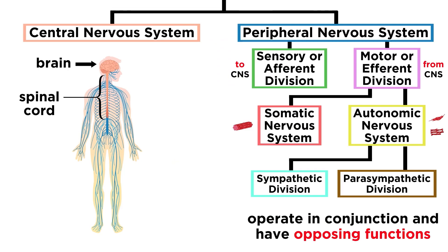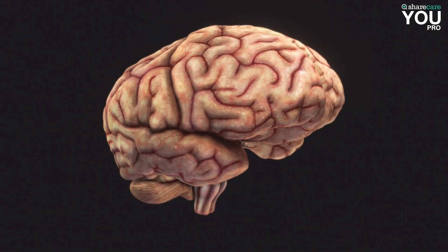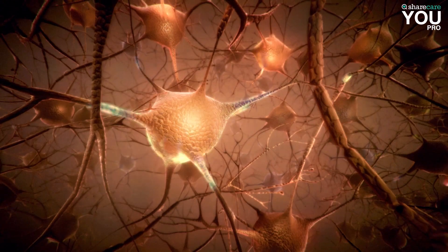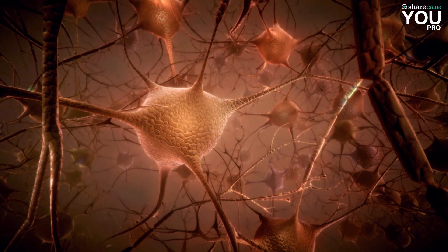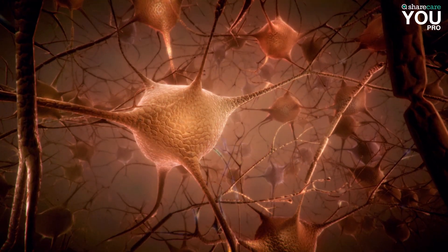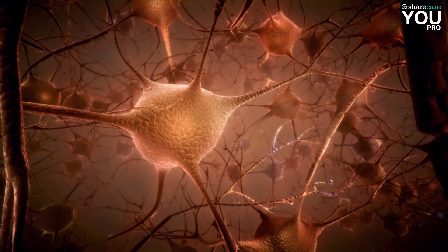Earlier in this series we spent several tutorials going over the nervous system. The starting place for that investigation was the central nervous system, and in particular, the brain. We often describe the brain as the most complex object in the known universe, consisting of hundreds of billions of cells linked by trillions of connections, producing our own consciousness through mechanisms that are not yet fully understood.